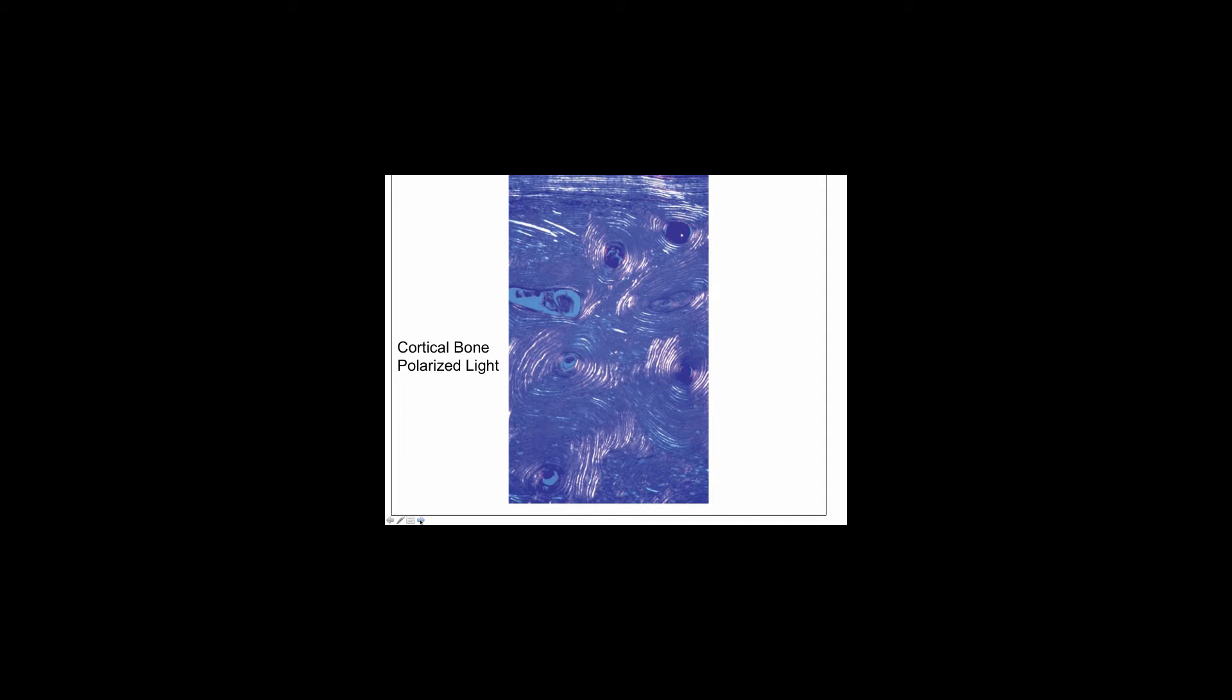The next slide is the same section of the previous cortical bone, but under polarized light. The architectural patterns of the different lamellae are now easily defined. Concentric lamellae surround the individual osteons, while interstitial lamellae reside within the spaces between concentric lamellae and their osteons. Circumferential lamellae comprise the cortical bone beneath the periosteum at the very top of the section.